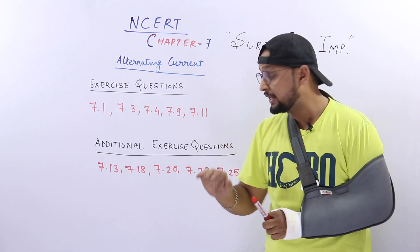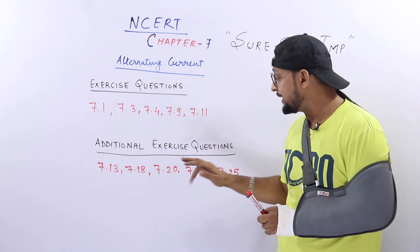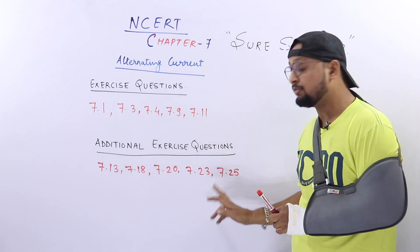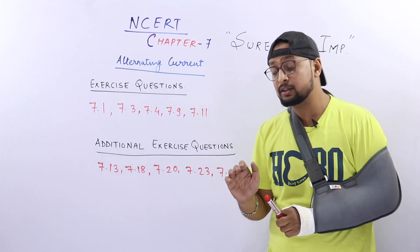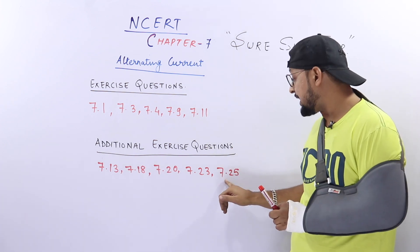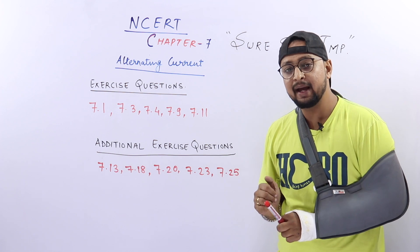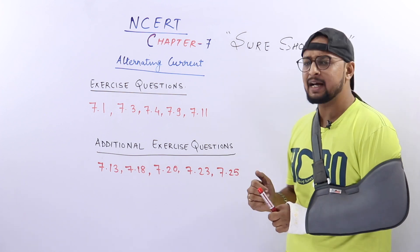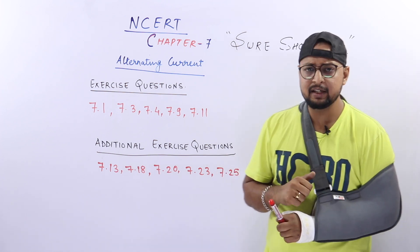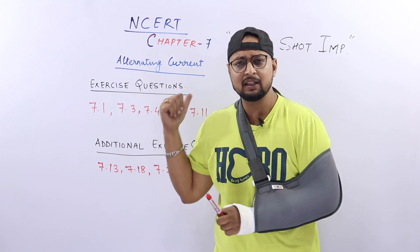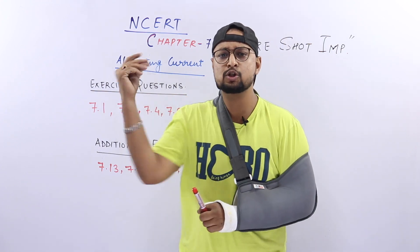सारी variety cover हो रही है. और additional exercise के लिए 1, 2, 3, 4, 5 — यह अपने आप में बहुत अच्छे questions हैं. यह last वाला थोड़ा सा एक level up है — अगर हो जाए तो अच्छी बात है, नहीं हो पाए तो कोई बात नहीं. ठीक है? तो तुम जल्दी से पहले इसका screenshot लो!